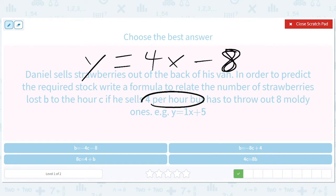Now, if we use the letters, right? This is hours, so that would be C. And the H is the, what does it say? B is the number of strawberries lost. So I guess we have to be careful. They're thinking about it as losing when he sells. So we're going to put a negative four there. So he sells strawberries, he loses four every hour, and then he also automatically loses eight. So it would be B equals negative 4C minus eight.